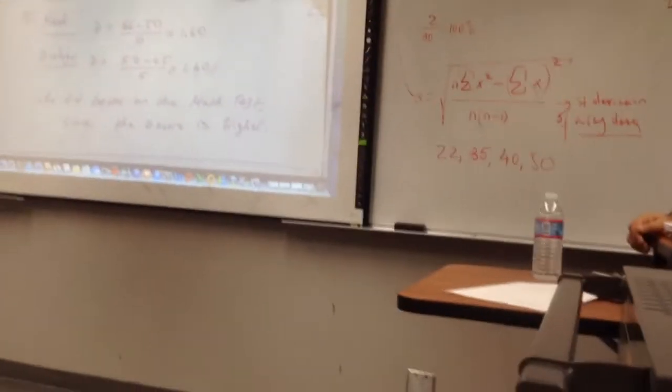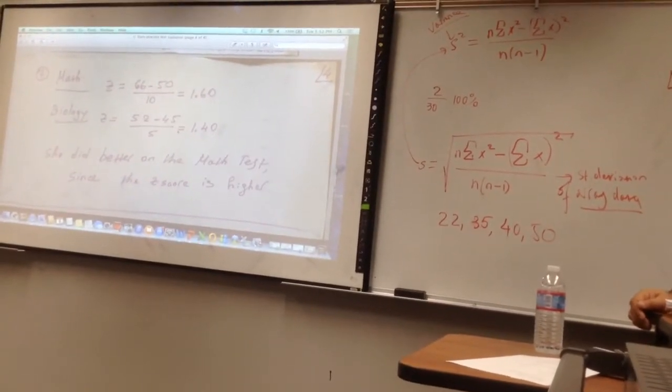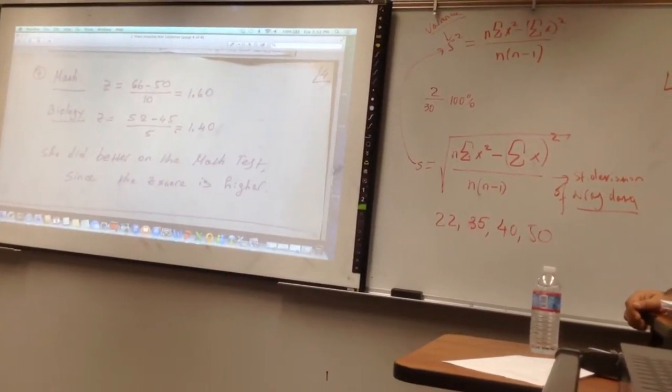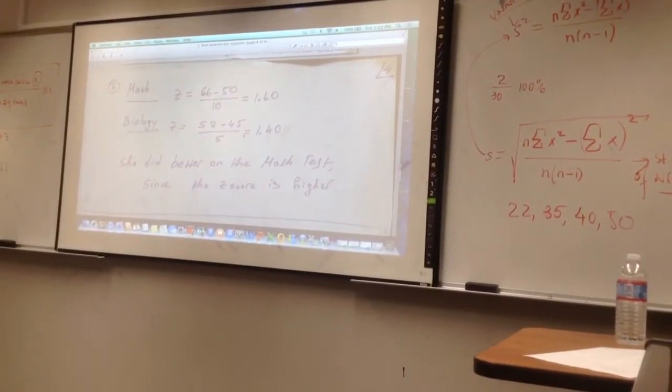Now we're determining which test she did relatively better on compared to other classmates. The score with the bigger Z score means she did relatively better. She did better on math than biology.